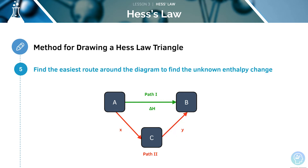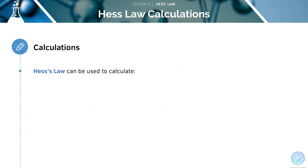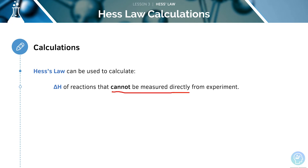Finally, we can find the easiest route around the diagram, which will enable us to find the unknown enthalpy change. So for here, we would do x plus y is equal to delta H. Hess's Law can be used to calculate the delta H of a reaction that cannot be measured directly from an experiment.